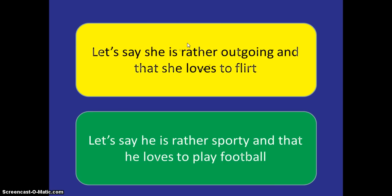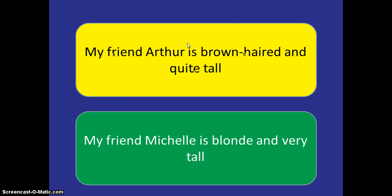This PowerPoint will stop when I press the F button. For example, I've got 'my friend Arthur is brown haired and quite tall' — that's going to be in the text — and what I then want the kids to do is to try and write down 'my friend Michelle is blonde and very tall.' What I'm looking for here is that they understand how to change adjectives in French, and clearly the adjectival endings will be different for females than they are for males.